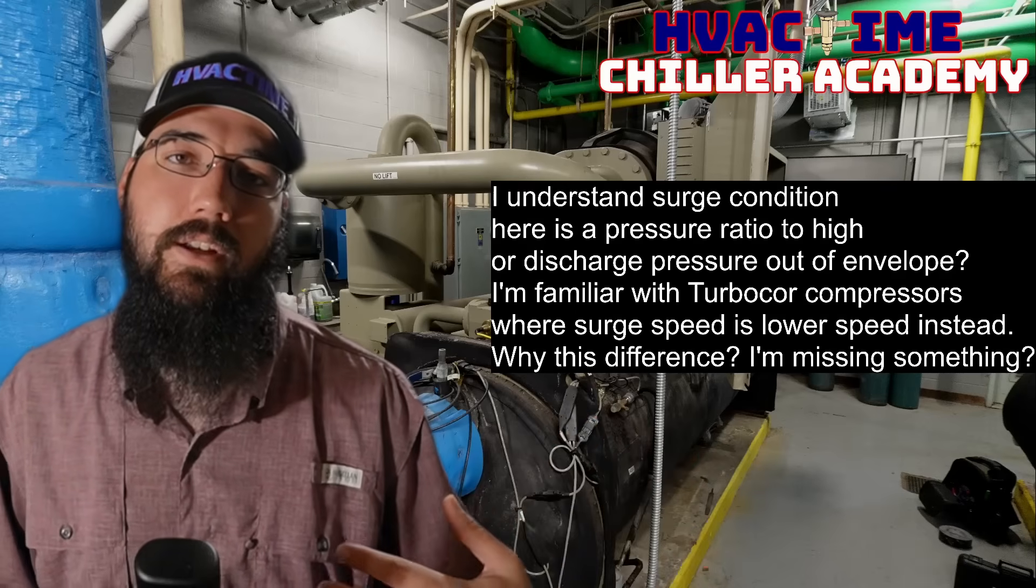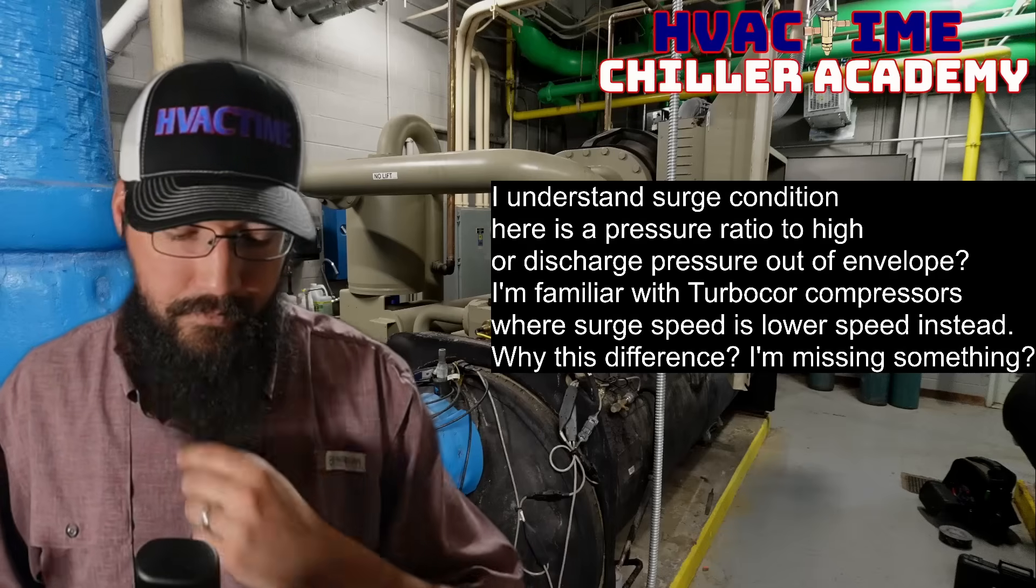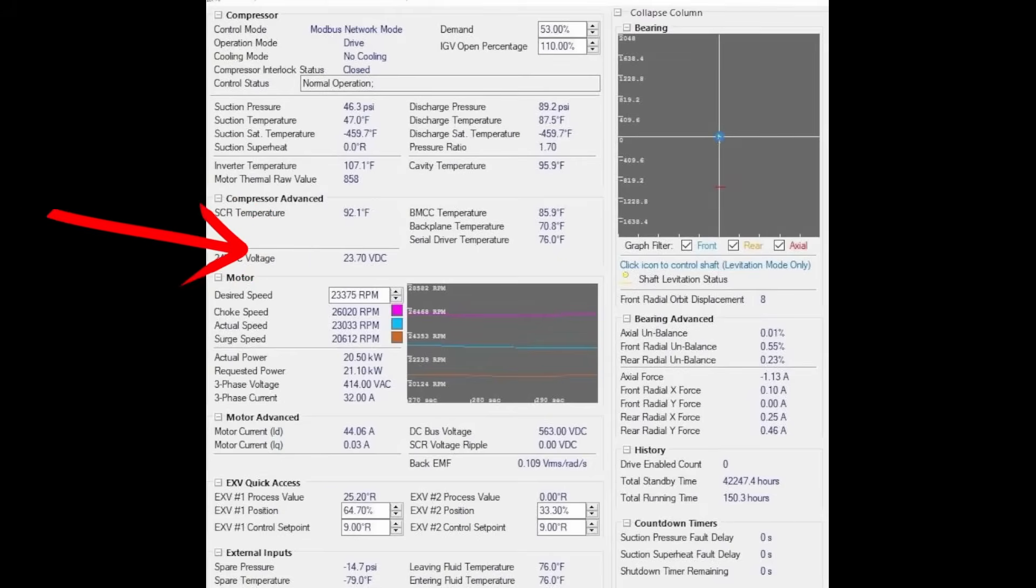In other graphs you can see it as actual speed. Let's pull up an actual TurboCore. This is the SMT tool from TurboCore, and what's being referenced here is the choke speed actual and surge speed. You'll notice the surge speed is lower than the choke speed.